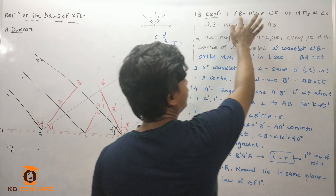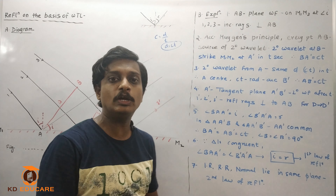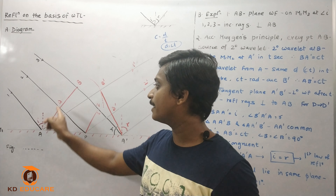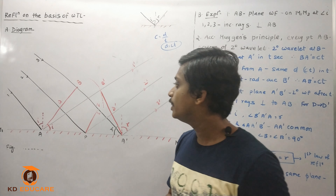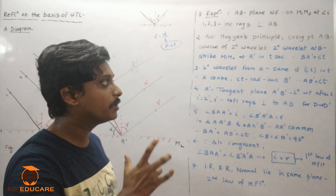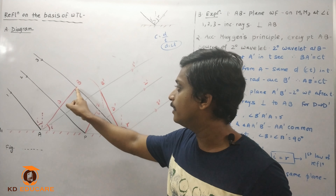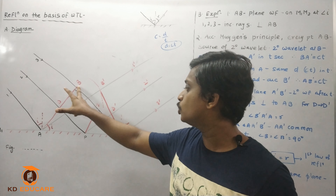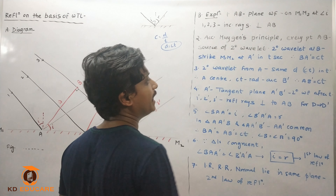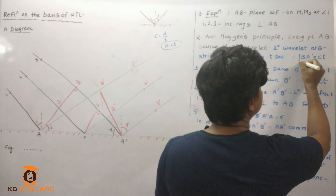As shown in the figure, let AB represent a plane wavefront incident on mirror M1M2 at angle I. The secondary wave from B strikes M1M2 at A'. The secondary wave starts from A'. BA' is represented by distance CT. So BA' equals CT.